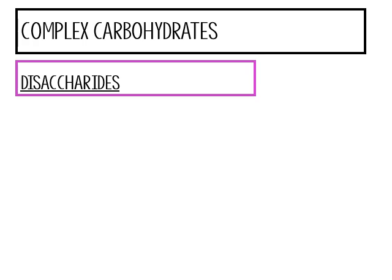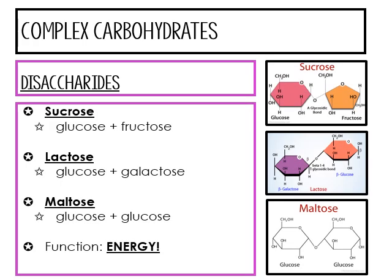Dealing with complex carbohydrates, we have disaccharides. These are probably your favorite things — that would be sucrose, which is table sugar. It's a combination of glucose plus fructose. You also have lactose, which is glucose plus galactose, and maltose, which is glucose plus glucose. Their function is strictly energy. You need to know and memorize these combinations — for example, glucose and fructose make sucrose.